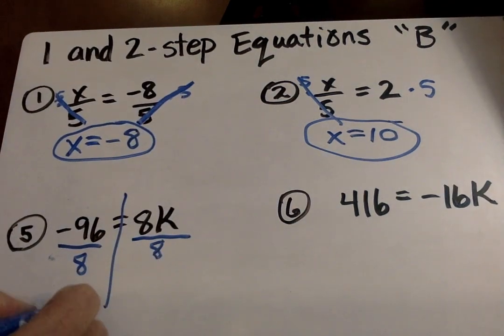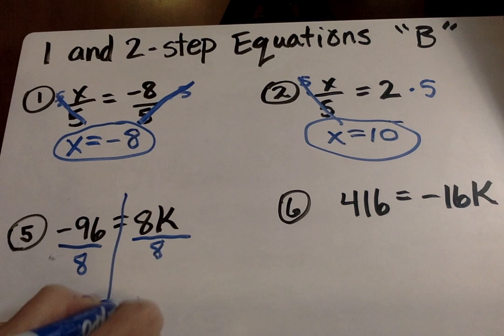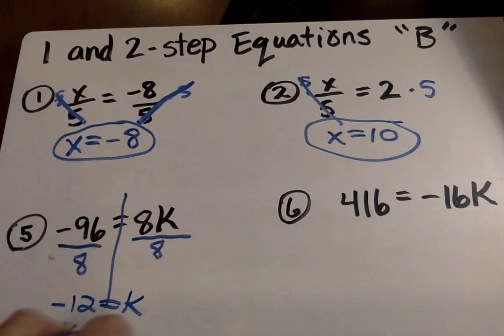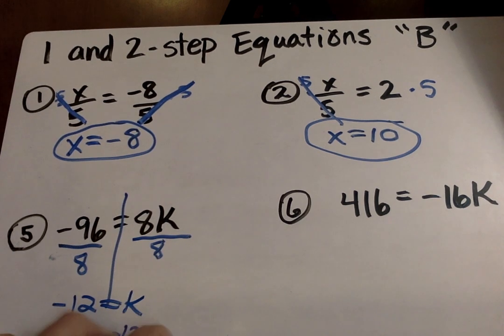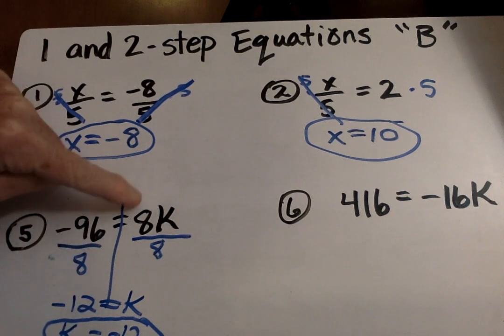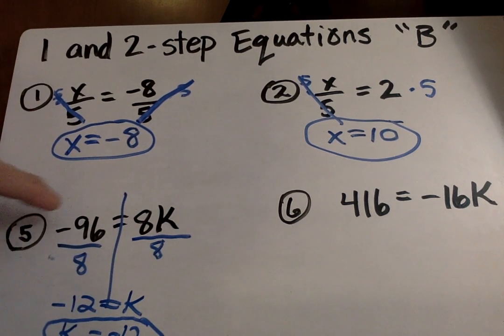So negative 12 equals K. And I like to switch it around, so the variable is always on the left. And if I want, I can go back and check it. Negative 12 times eight equals negative 96. That's correct. So I've done it correctly.